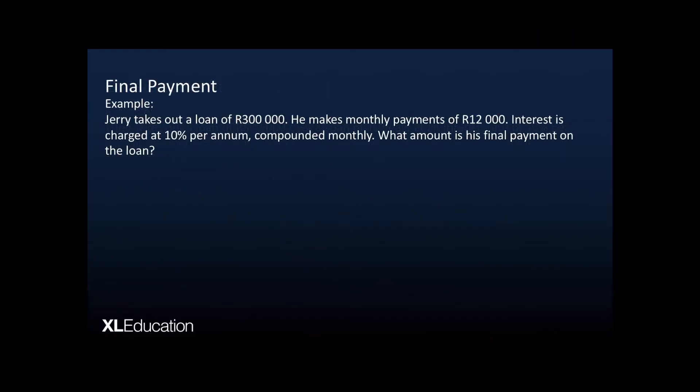Now let's look at how to calculate the final payment on a loan. Jerry takes out a loan of 300,000 rand. He makes monthly payments of 12,000 rand. Interest is charged at 10% per annum compounded monthly. What amount is his final payment on the loan?